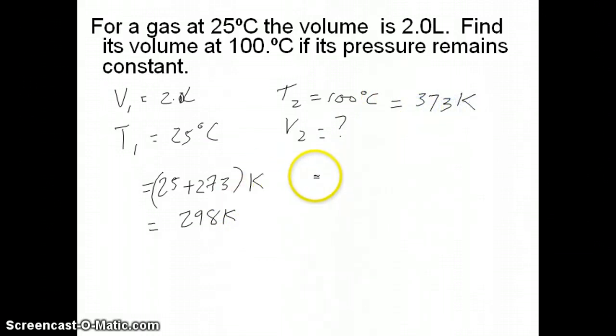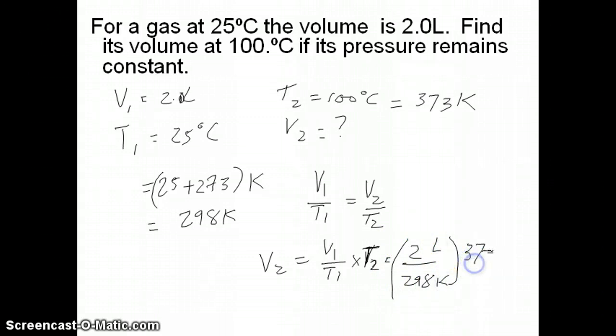That allows you to then use your Charles's law relationship, which is V1 over T1 equals V2 over T2. You want to solve for V2, which is just going to be V1 over T1 times T2. Then you just plug in your number: 2 liters over 298 Kelvin times T2, which is 373 Kelvin. You notice that these cancel out. And then you get a number here which corresponds to your answer. So that answer is about 2.50 liters of volume 2.